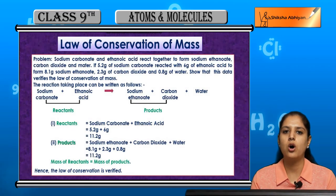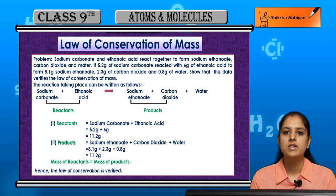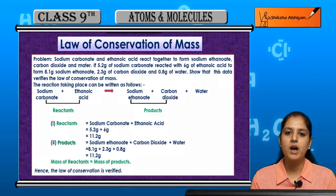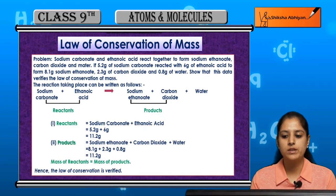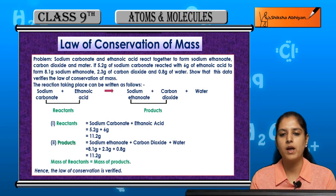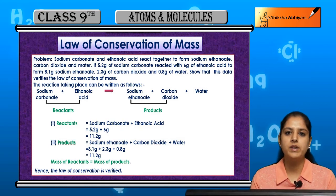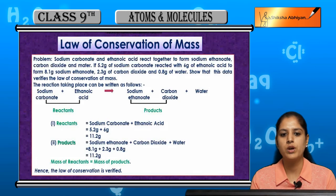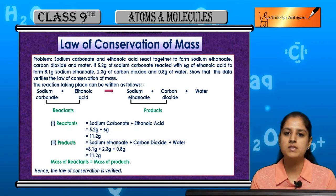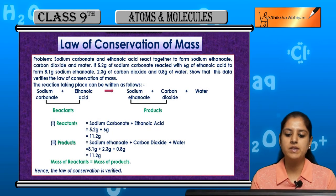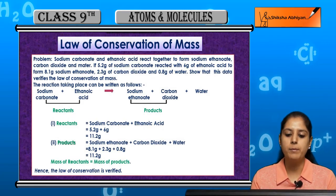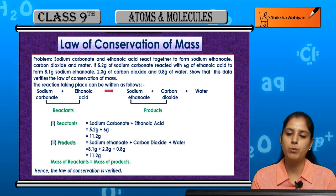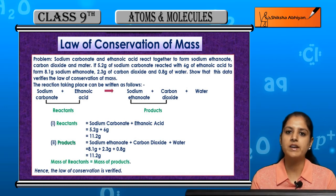Humayi conservation of mass ka jo law hai, usko verify karna hai. So sabse pehle jo reaction ho raha hai usko pen down kar lete hai. The reaction is: sodium carbonate plus ethanoic acid which gives us sodium ethanoate plus carbon dioxide plus water. Sodium carbonate and ethanoic acid kya hai? Reactants. Aur baqi tino jo hai woh products hai. Ab sab ke masses dekh lete hai. Reactants mein sodium carbonate plus ethanoic acid ka combined mass: 5.2 grams plus 6 grams, that is 11.2 grams.